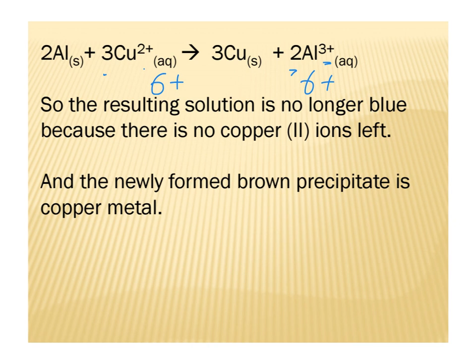And as we mentioned before, our aluminum solid, which was gray or silverish, has disappeared, leaving us with a brown copper metal on the product side. That is the theory for our net ionic equation. In our next video, we'll do some examples.